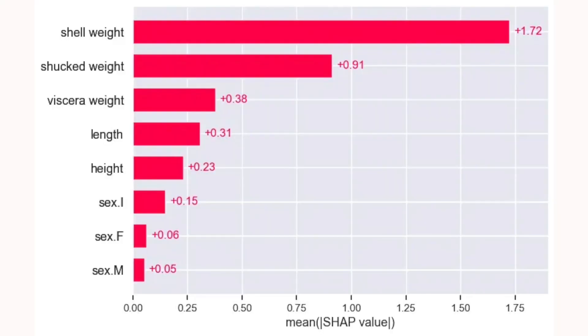The first is the mean SHAP plot. For each feature, this gives the absolute mean SHAP value across all instances — or in our case, all Abalone in our dataset. Features that tend to make significant contributions to predictions will have high mean SHAP values. In other words, this plot tells us which features are most important in general.